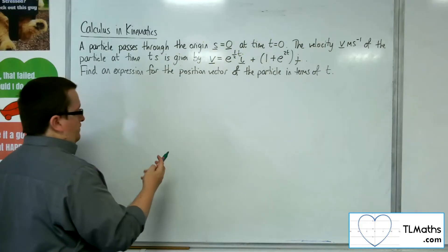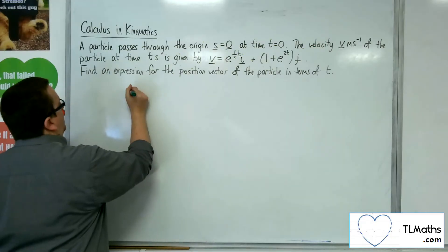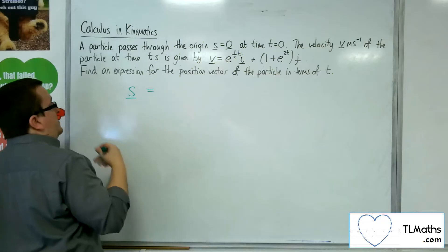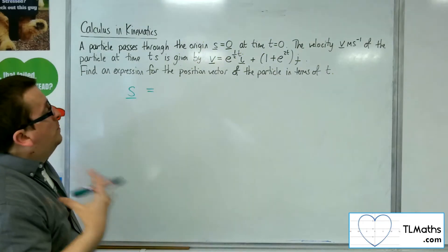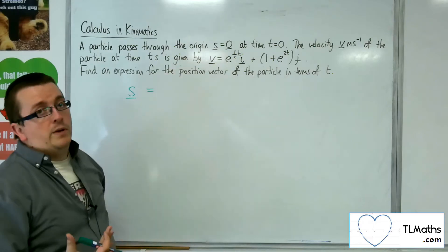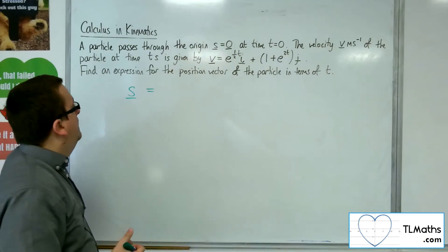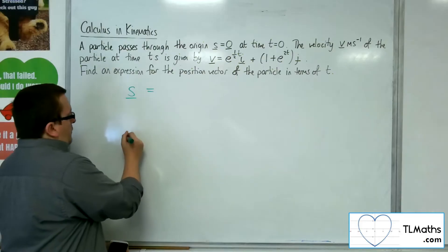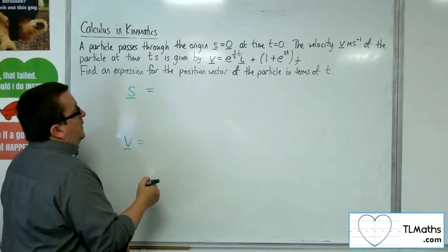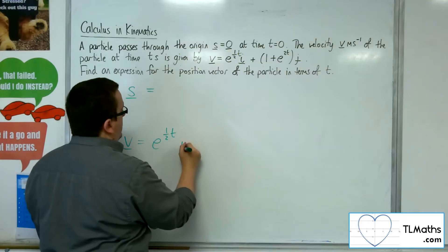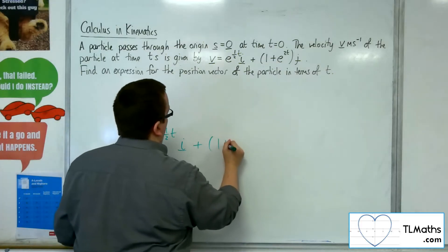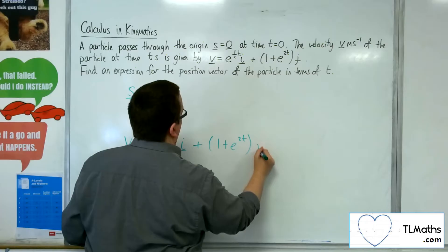So we want s, this is the displacement vector, which will be the same as the position vector because we're going through the origin initially. And then we've got the velocity, which is given to us as e to the half t i plus 1 plus e to the 2t j.